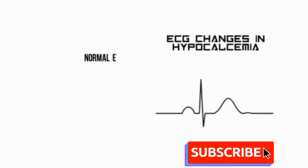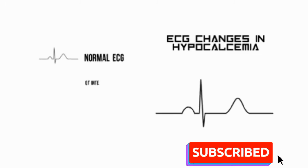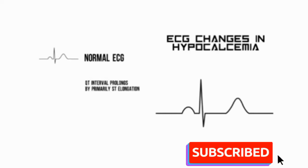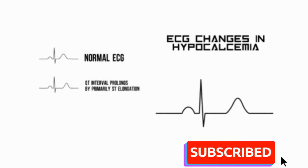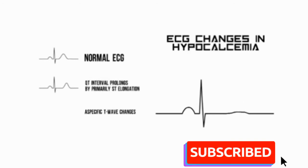The ECG changes in hypocalcemia are few and easy. The QT interval prolongs primarily by the elongation of the ST segment. Also, non-specific T wave changes occur, most commonly T wave inversion.